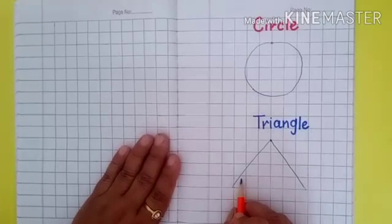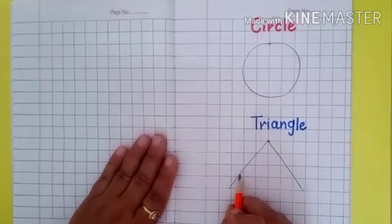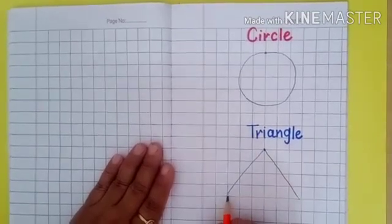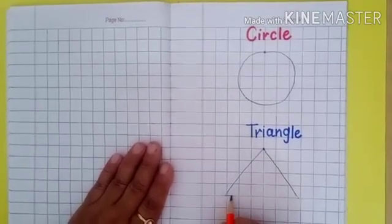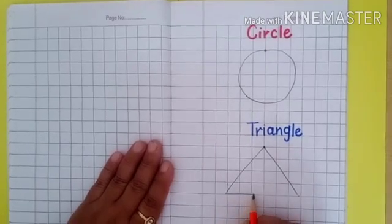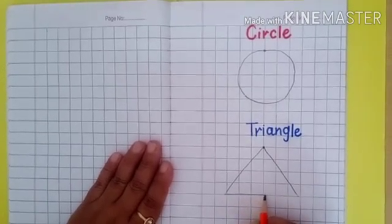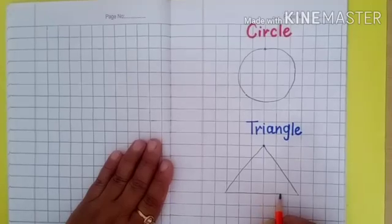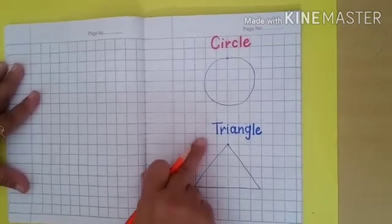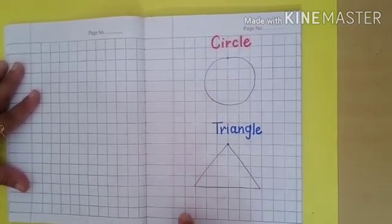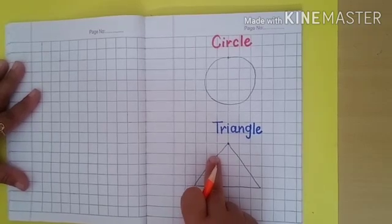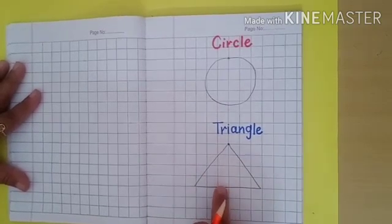Now, we will join both slanting lines with a sleeping line like this. Dear kids, move your pencil on the line like this. This is our triangle. Triangle has three sides. One, two, three.